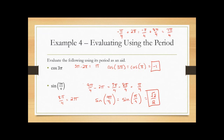So sine of 9π/4 equals √2/2. A helpful memory trick: cosine comes before sine alphabetically, and X comes before Y alphabetically, so cosine corresponds to X and sine corresponds to Y.